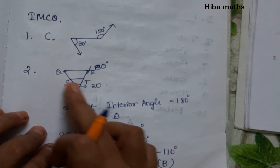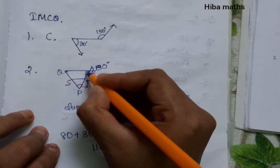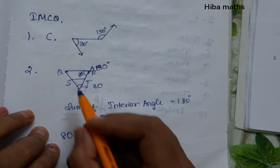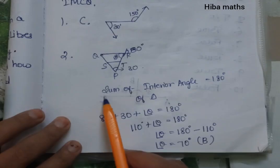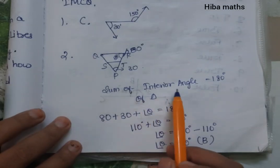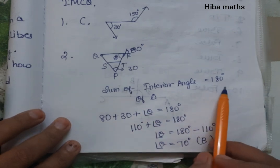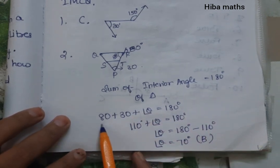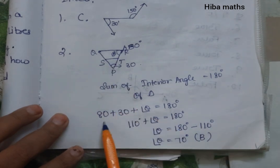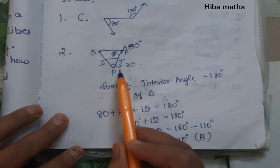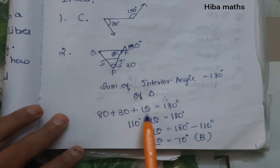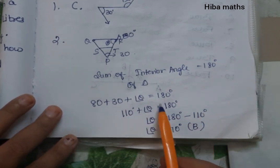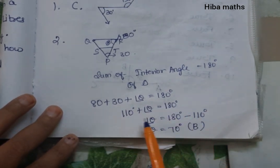So the triangle has an angle of 80 degrees. The sum of the interior angles of a triangle is 180 degrees. The first angle is 80, the second angle is 30, and the third angle is Q. So 80 plus 30 plus Q is equal to 180 degrees.